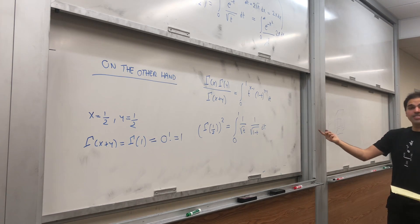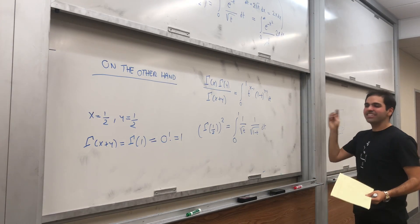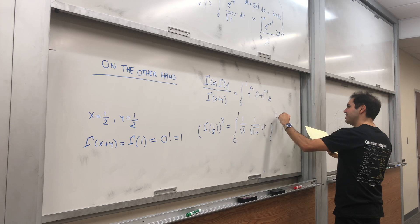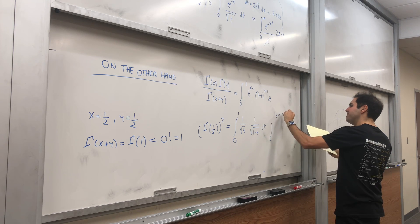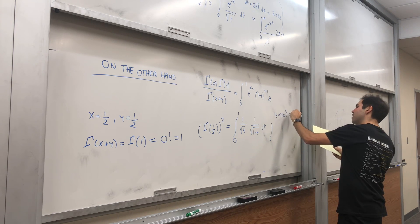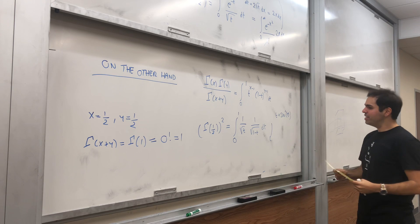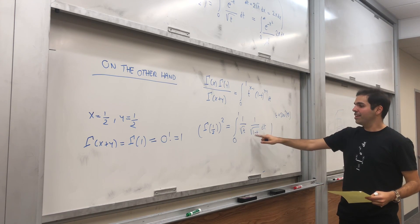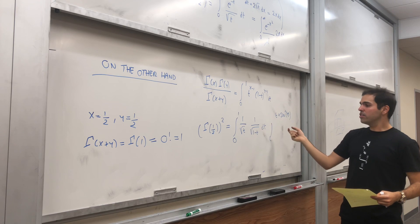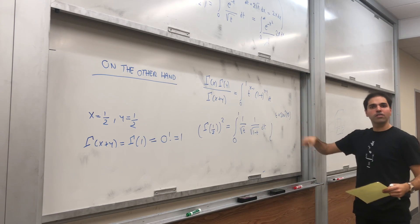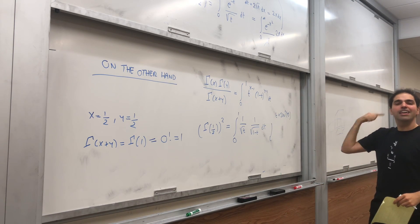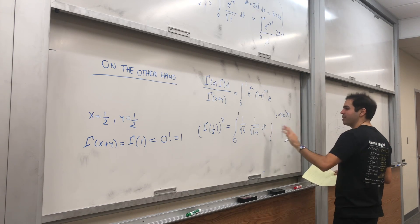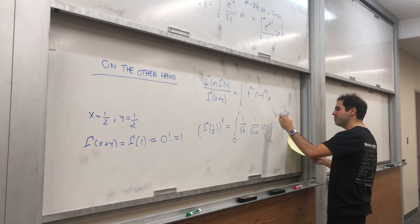It turns out you can evaluate it using a very beautiful trig substitution. Let t = sin²(θ). The reason is: √t becomes sin(θ), and √(1−t) = √(1−sin²θ) = √(cos²θ) = cos(θ). So it's absolutely beautiful.